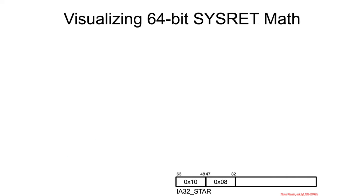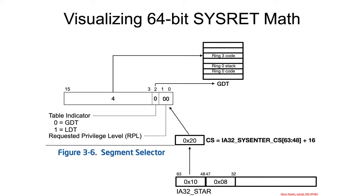On the other side of things, going back from kernel space into user space, the CS register comes from bits 63 to 48, and it is those bits plus 16. So there's an automatic 16 added, so hex 10 added to that. Again, interpreted according to a segment selector, that would be index 4 up here.